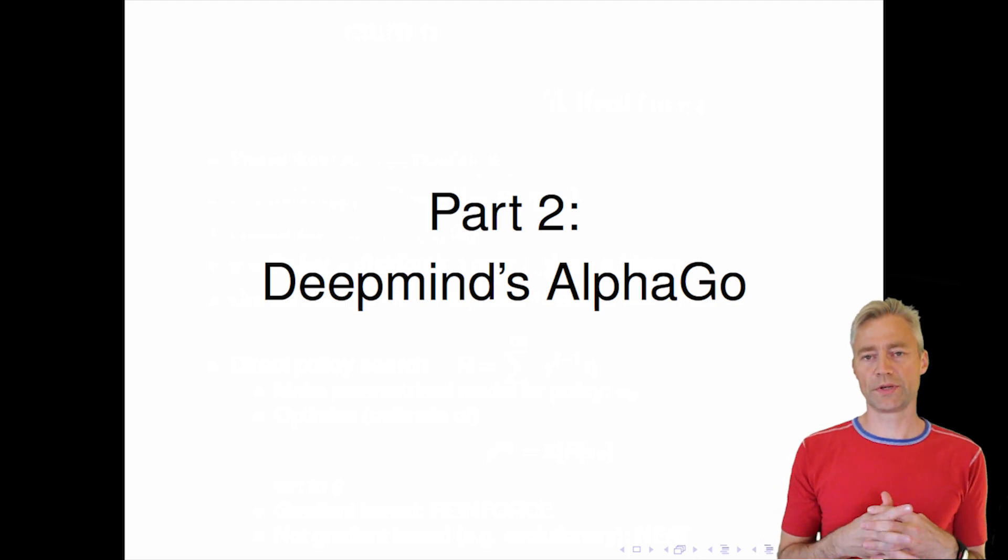So that was a little bit about what are the words we use when we talk about reinforcement learning and a little bit about the different methods. Now I'll take a case, DeepMind's AlphaGo, and that would be the topic of part two.